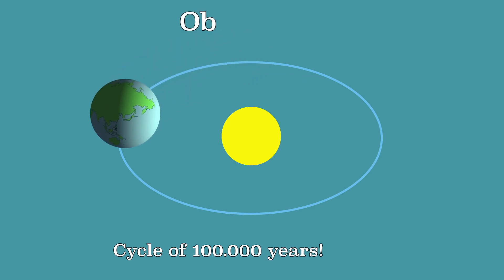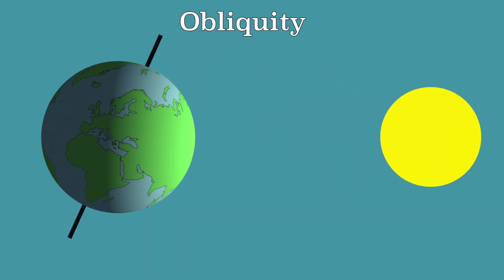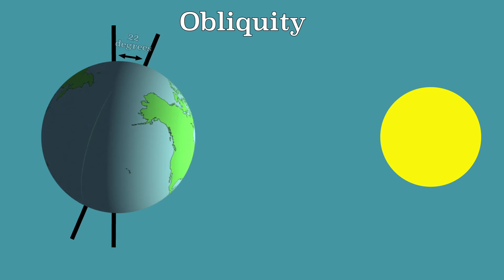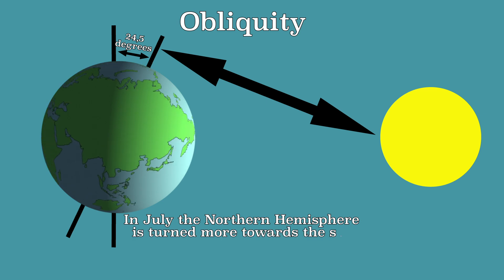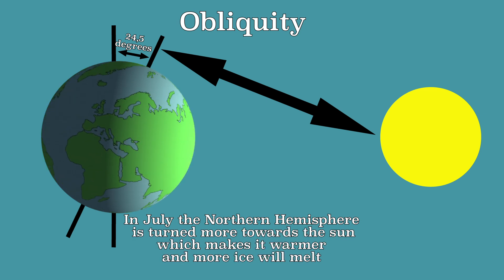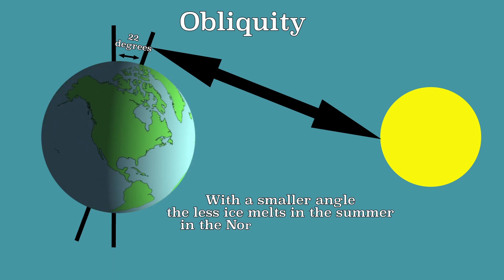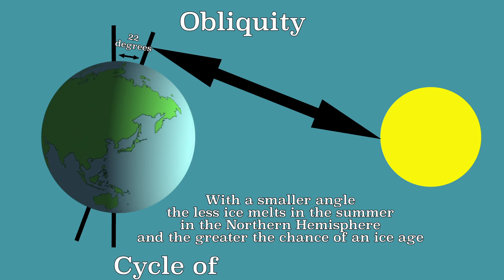The second variable is obliquity — the tilt of the Earth's axis relative to the sun. The Earth's axis has a tilt of 23 and a half degrees, but this changes between 22 and 24 and a half degrees. The wider the angle, the more the northern hemisphere turns towards the sun in summer and the more ice melts. The smaller the angle, the less ice melts in summer and the greater the chance of an ice age. The obliquity changes approximately every 41,000 years.